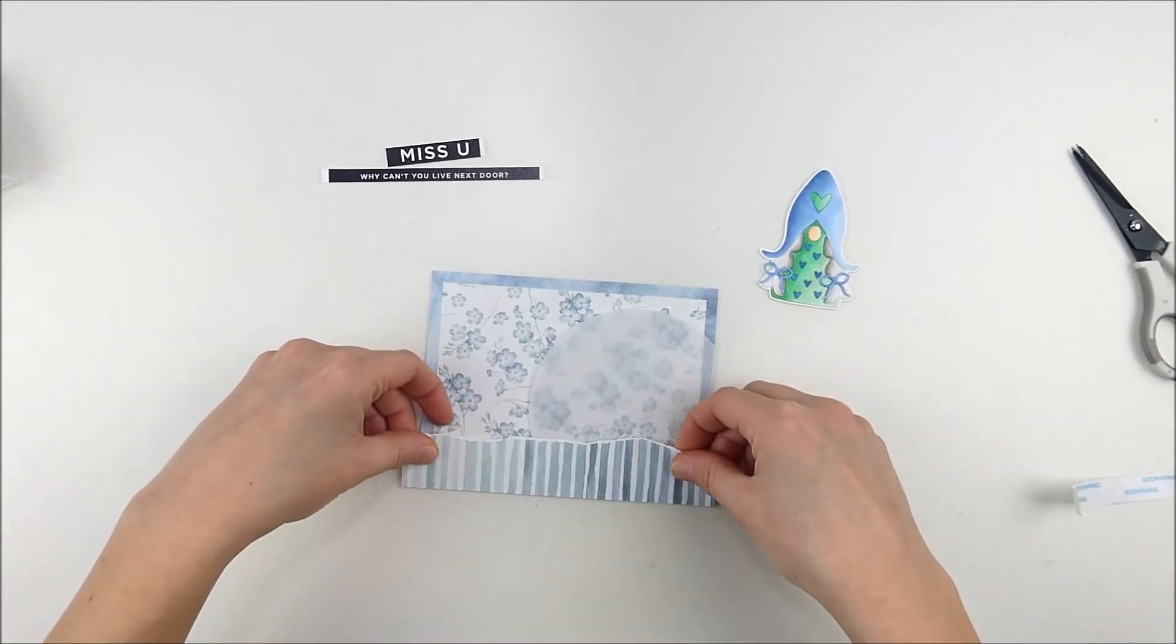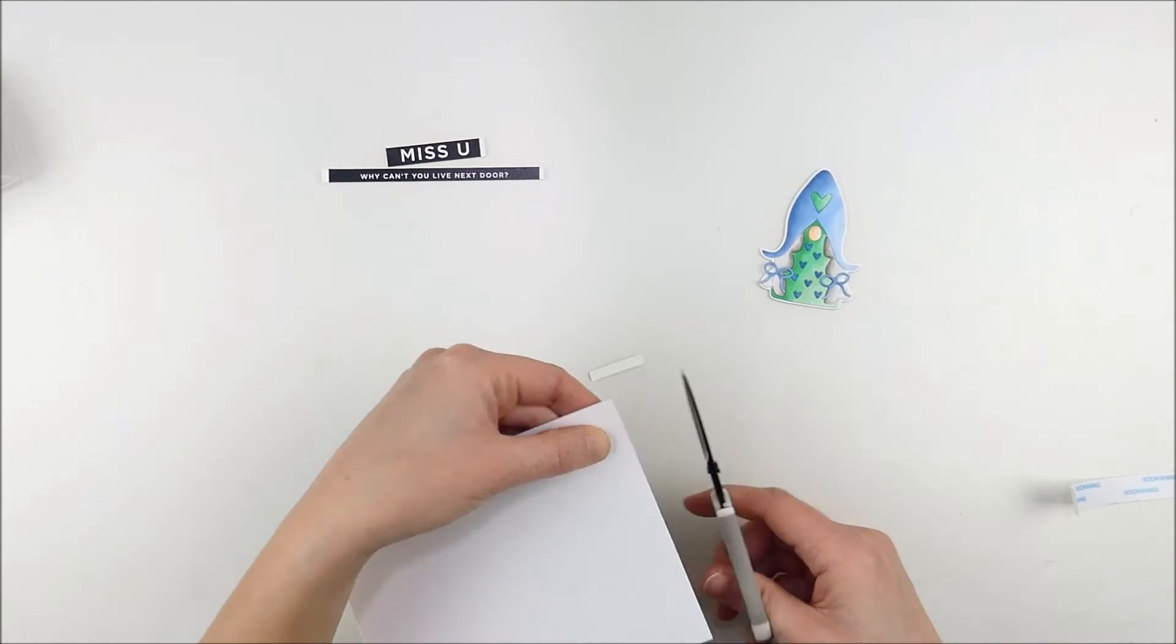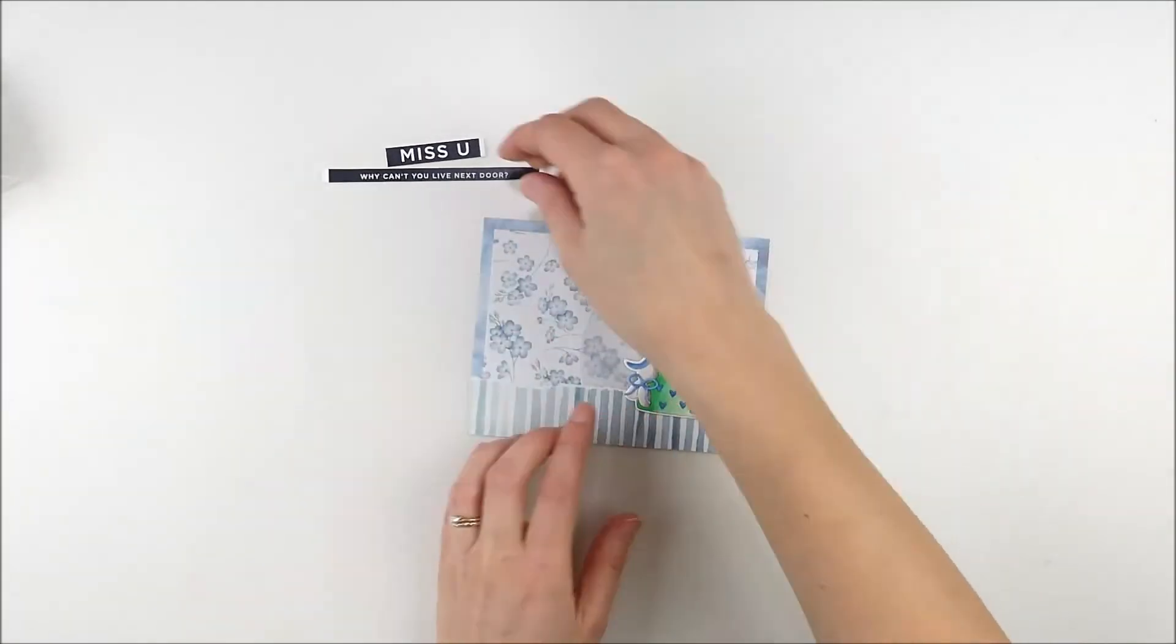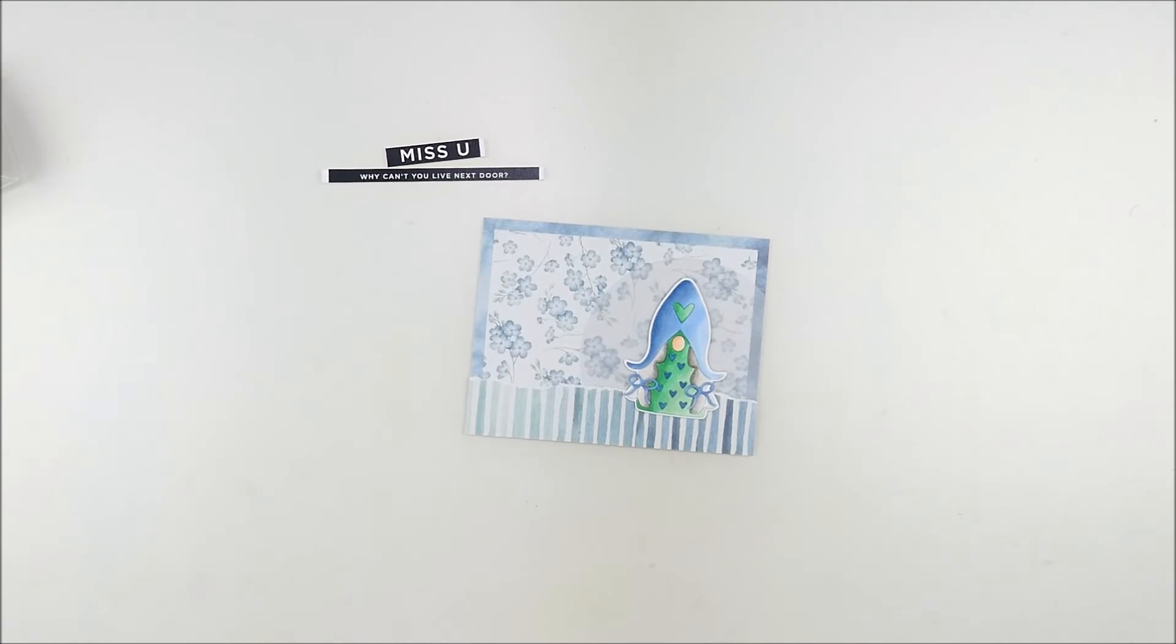I trimmed off the extra of that vellum just turning over to the reverse and using scissors. I'm gonna do the exact same thing with that strip at the bottom as well. It's an easy way just to line it up and get it all even.